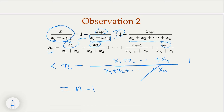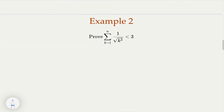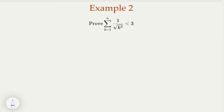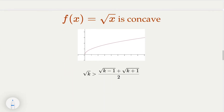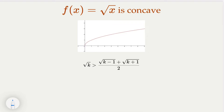Let's move on to the second inequality we want to prove: a summation of 1 over the cube root of k to the third power — we want to prove it's smaller than 3. Same technique, but a little more involved. First, we need to know that the square root of x as a function is a concave function — curved down.